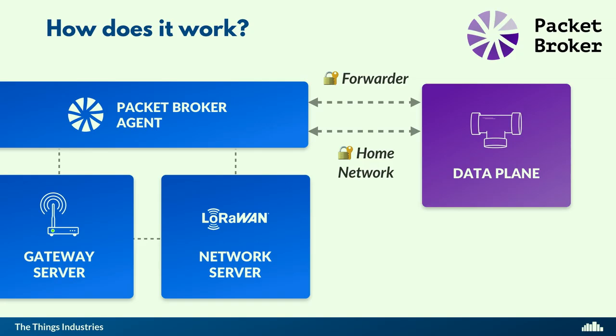The Packet Broker agent can have two connections with the data plane. It can be a forwarder or it can be a home network. A forwarder is when you are forwarding traffic from your gateways to the Packet Broker and subscribing to downlink traffic. Your gateways receive data, you forward that to Packet Broker, and when some home network says it wants to send a downlink message, it sends it back to the Packet Broker agent, which forwards it to the Packet Forwarder on the gateway to be sent.